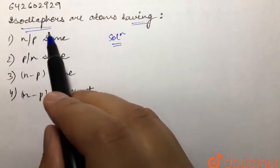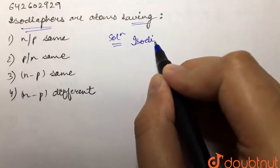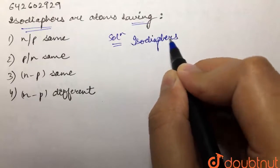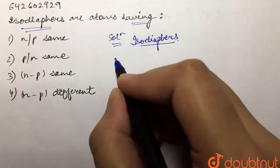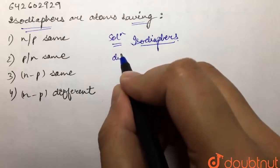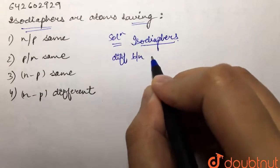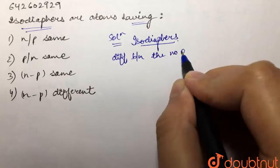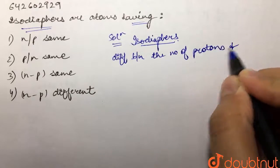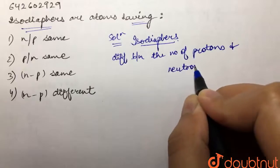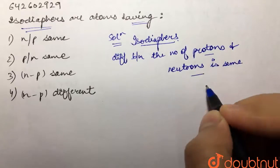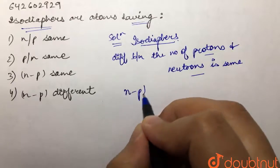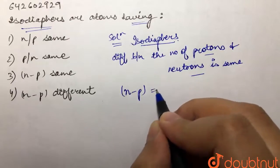First of all we will see what are isodiaphors. Isodiaphors are basically a set of atoms for which the difference between the number of protons and number of neutrons is same. The difference between proton and neutron is same. So we can say that n minus p value for them is the same.